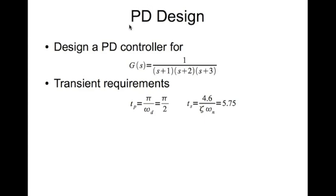That essentially means you make the root locus go through desired closed loop poles in the complex plane. You are bending the root locus with PD, unlike PI where you don't bend the root locus.